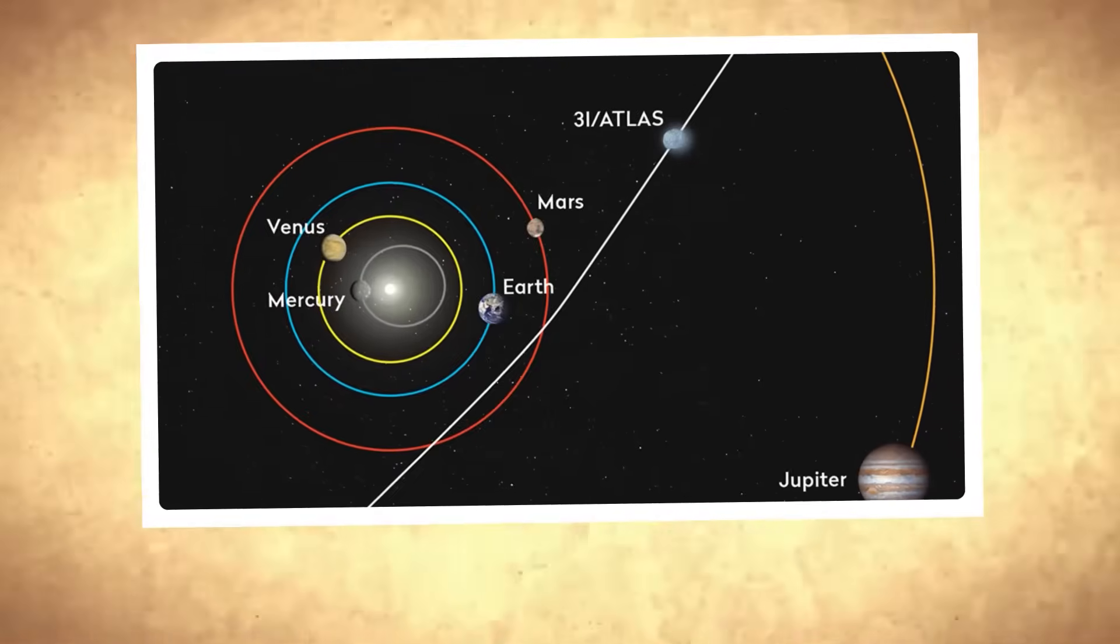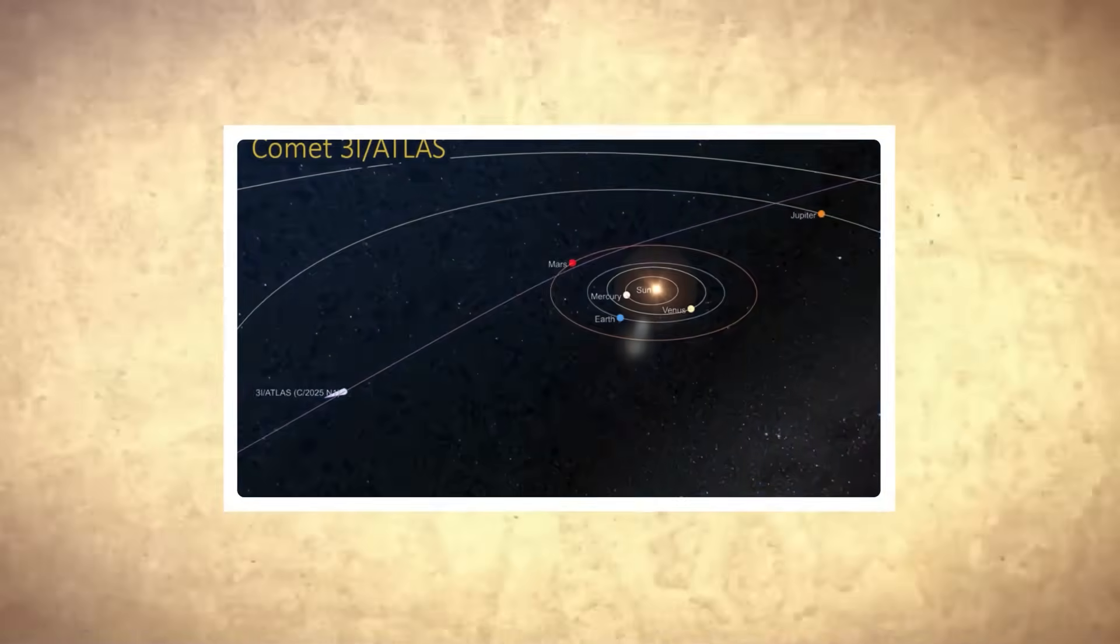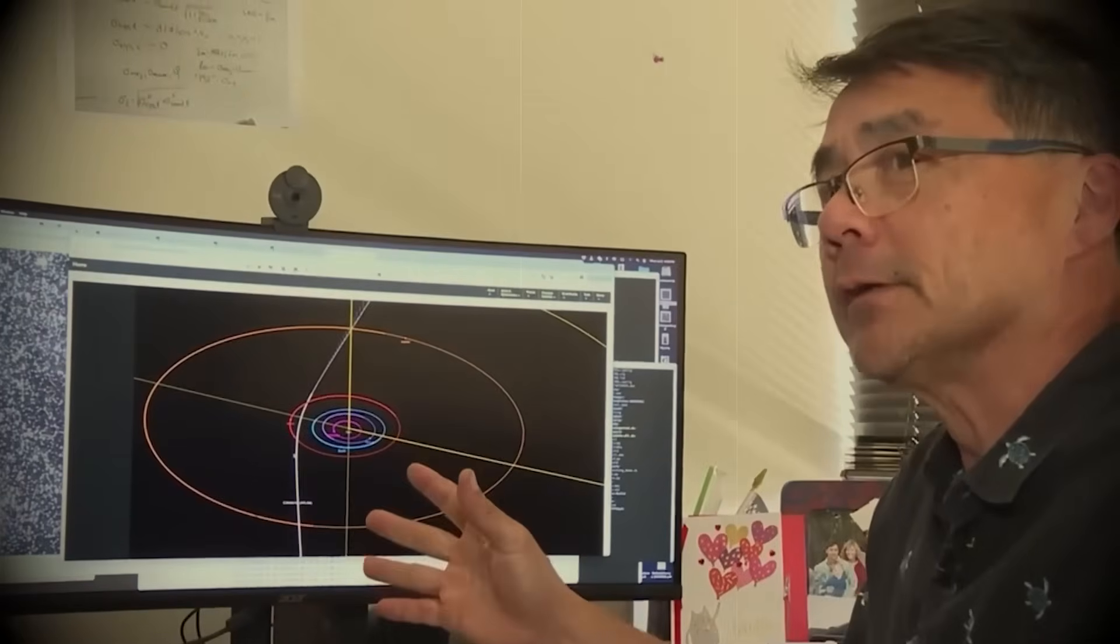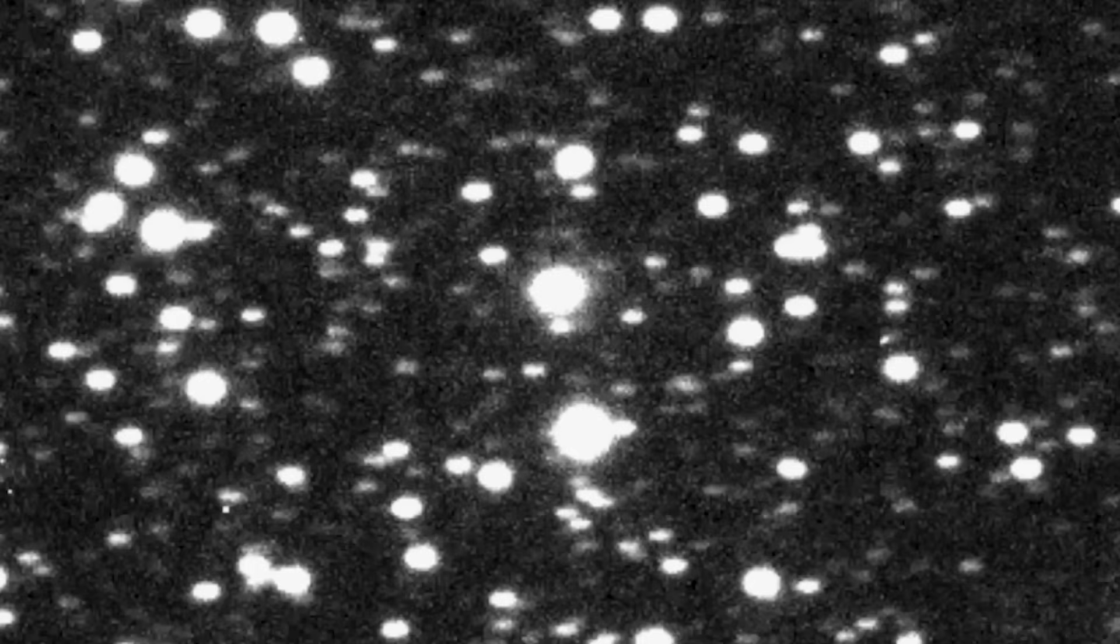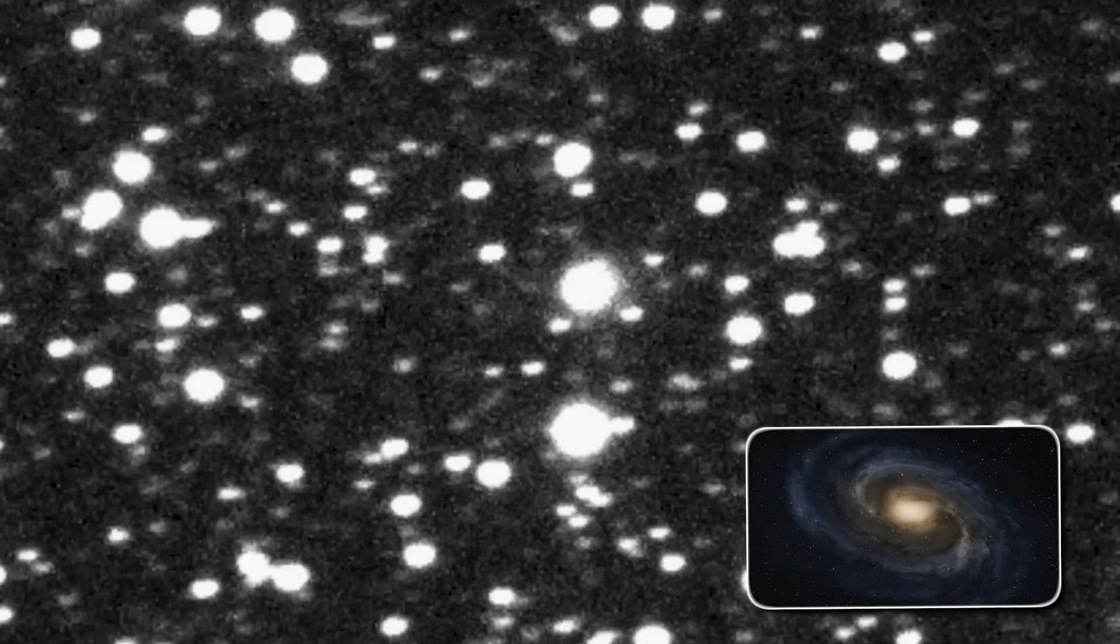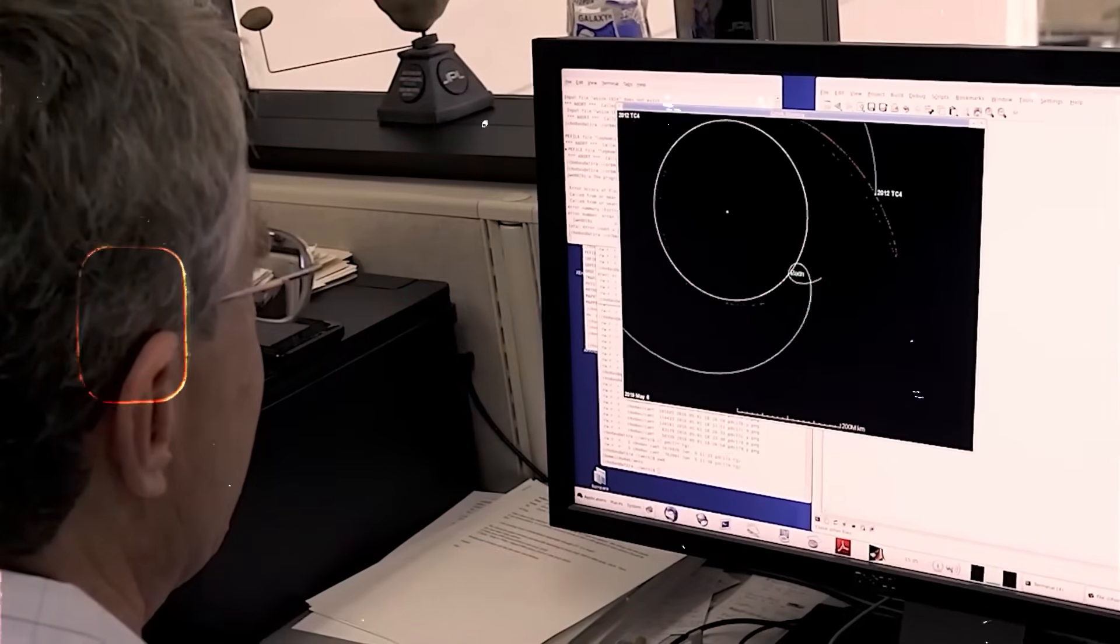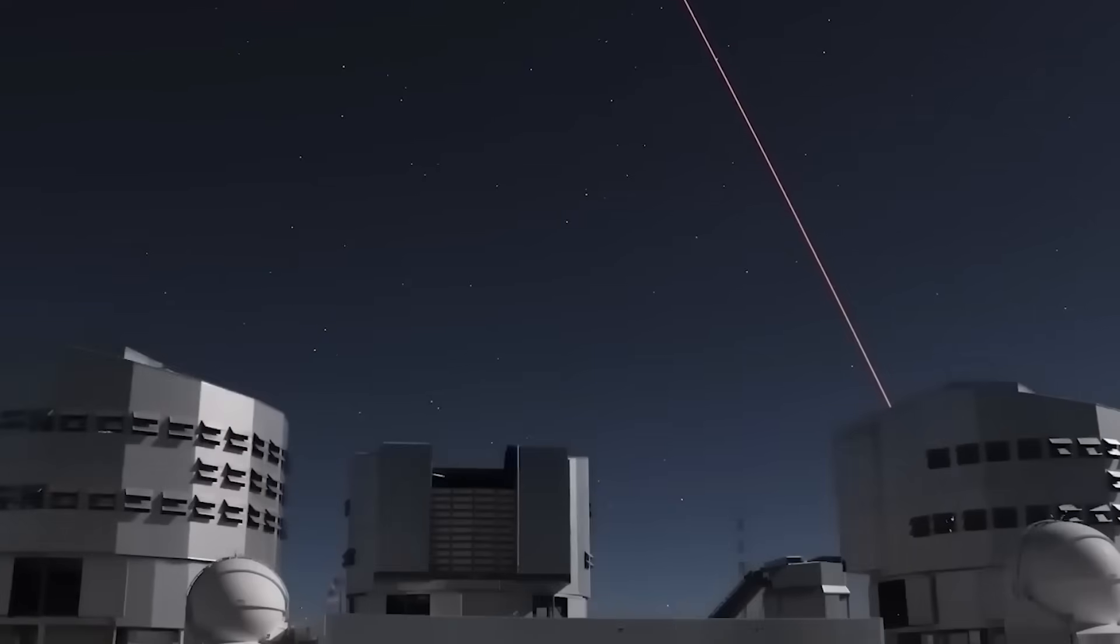What happens after December 19th is equally fascinating. The comet will continue its journey outward, passing relatively close to Jupiter in spring 2026. That encounter will give scientists one last chance to study this visitor before it heads back into the vast darkness between stars. After that, it's gone forever, continuing its journey through the Milky Way on a path that might take millions of years before encountering another solar system. Scientists expect to keep gathering data for several more months as telescopes track the comet's retreat. Every measurement matters because objects like this are incredibly rare. We might not see another confirmed interstellar visitor for years, possibly decades.